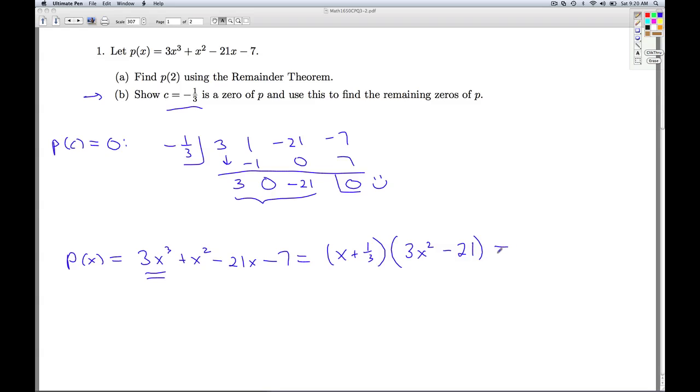So you can see how this is going to help us find the remaining zeros. From the x plus 1 third equals 0, we get our x equals negative 1 third, which we knew. But now we have this other quantity to set equal to 0 as well. I can add 21 to both sides, divide by 3, and extract square roots. And so showing it's a 0 this way with synthetic division, let's just break it down and find the other remaining zeros. So that'll do it for number 1.